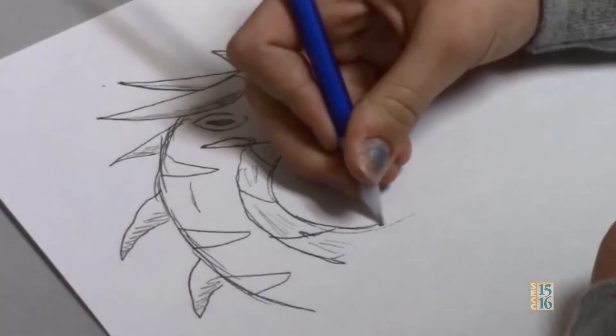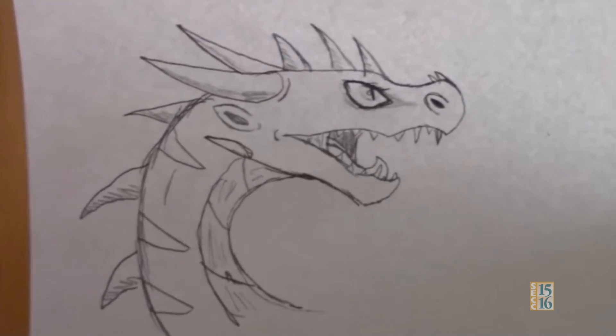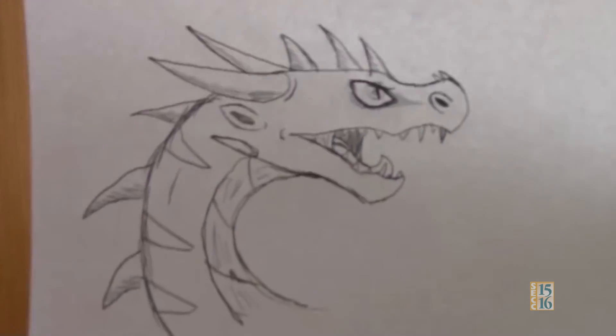And then you can add markings and stuff. And then you have a dragon. And that is how you draw a dragon. This is what it will look like when you're done.